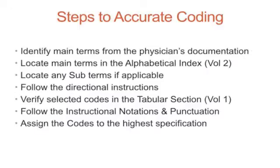Steps to accurate coding: First, identify main terms from the physician's documentation. Next, locate main terms in the alphabetical index, Volume 2. Locate any subterms if applicable. Follow the directional instructions. Verify selected codes in the tabular section, Volume 1. Follow the instructional notations and punctuation. Assign the codes to the highest specification.